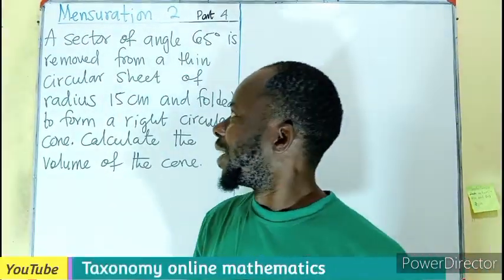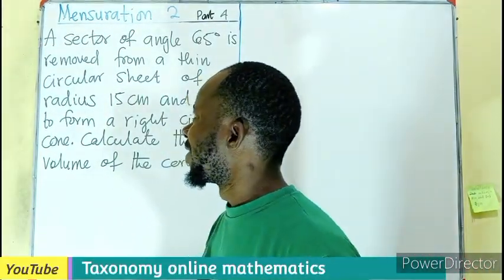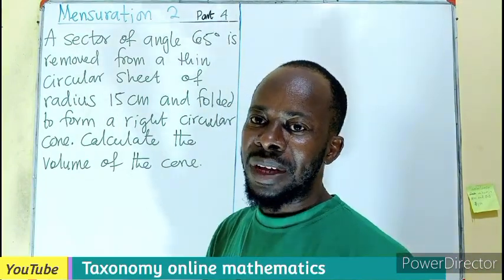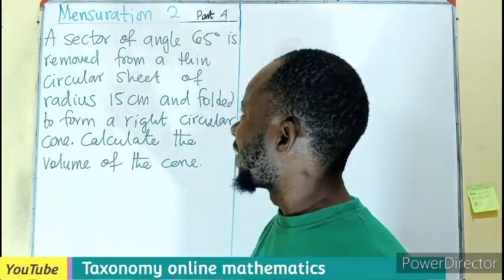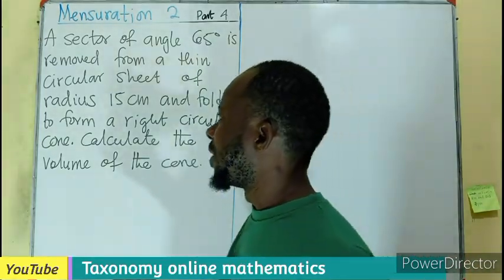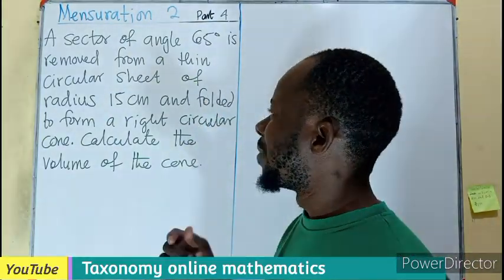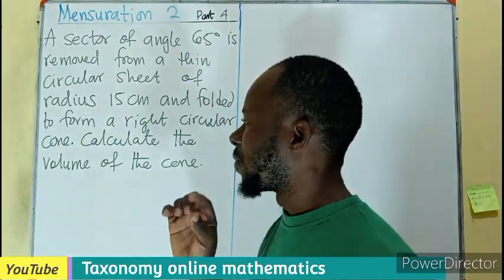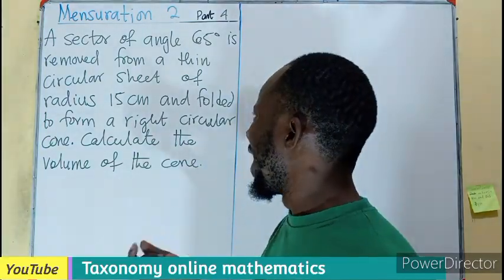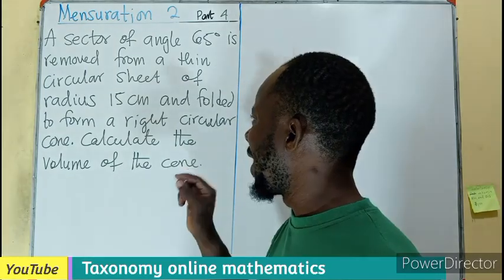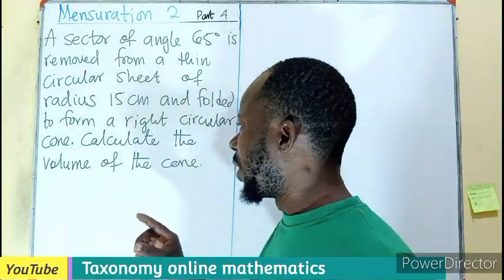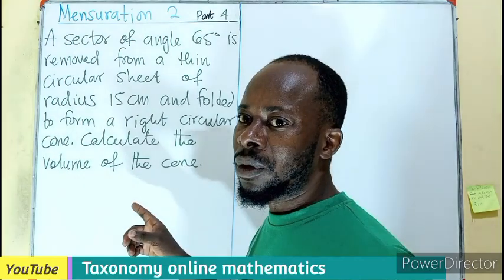Hello, welcome. Let's provide an answer to this question under the volumes of a cone. A sector of an angle 65 degrees is removed from a thin circular sheet of radius 15 cm and folded to form a right circular cone. We have to calculate the volume of the cone.